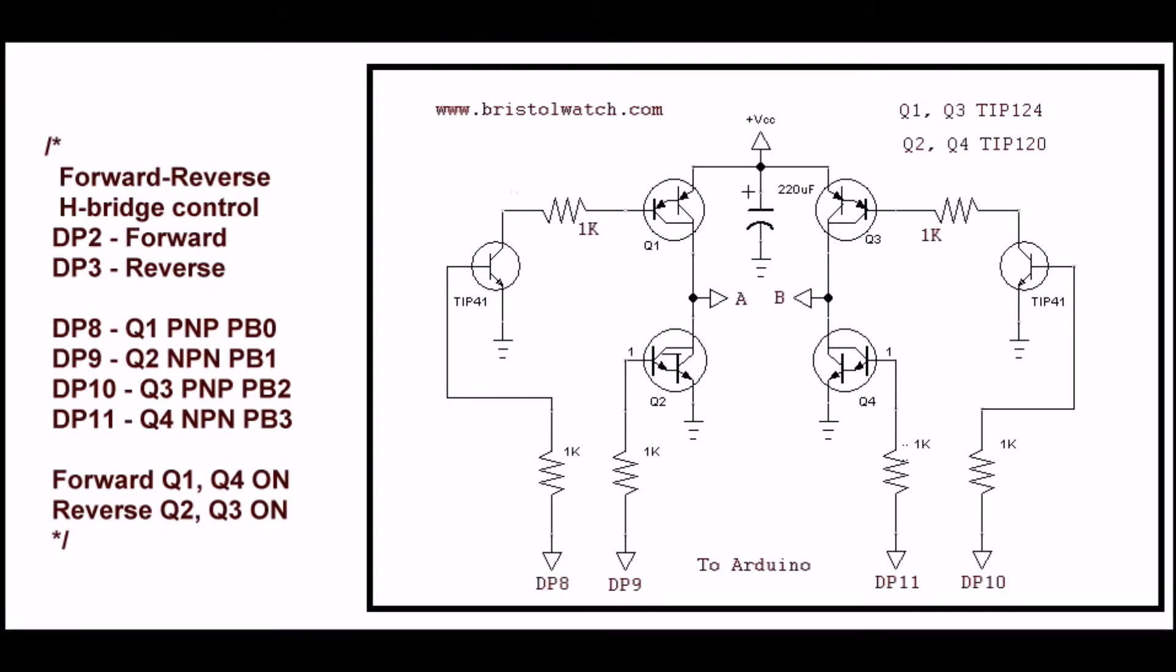Let's just take a quick look at the hardware. This is our H-bridge, of course. It consists of two driver transistors for the PNP Darlingtons or Bipolars, whichever one you use.